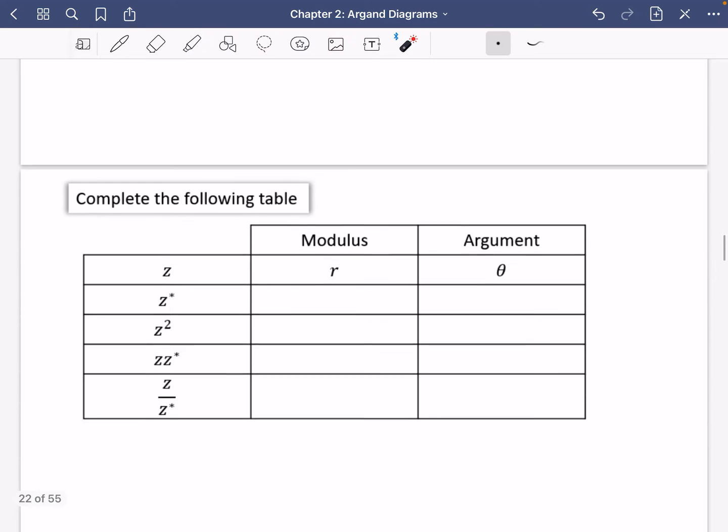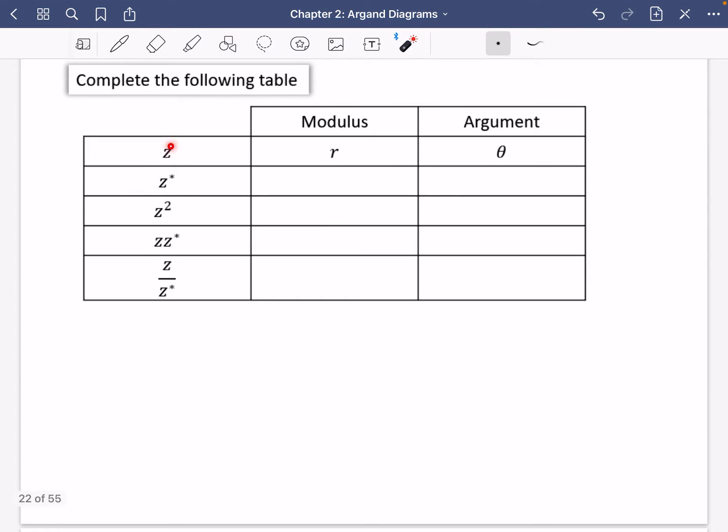And then the second one is just to complete this table where you're told that z, the complex number, has a modulus r and an argument of theta, and you need to try and work it out for all of these other ones that you've got here. Just a quick reminder, z star means the complex conjugate of z, but I'm going to go through both of these questions now.